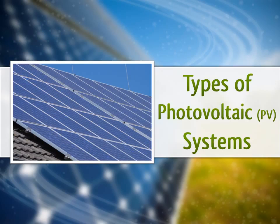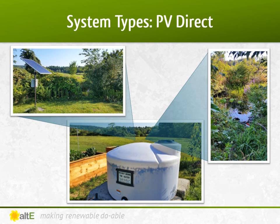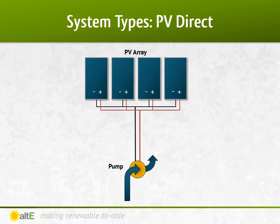Let's start with the different types of photovoltaic or PV systems. PV direct systems are the most basic type. The most common one is solar water pumping for remote irrigation, watering livestock, or pumping from a well or stream to a cistern. A PV direct system can consist of as few as two components: the solar panel and the device being powered, like a pump or fan. There is often a controller or a linear current booster between the two and some fuses and breakers, but not much more than that.